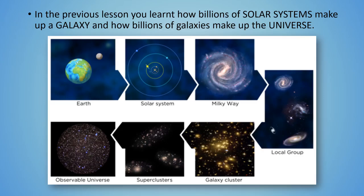In the previous lesson, you learned how billions of solar systems make up a galaxy and how billions of galaxies make up the universe. Our sun with planets orbiting around it is called the solar system. Billions of solar systems together make up a galaxy — in our case the Milky Way. Billions of galaxies of different shapes and sizes together make up the universe as we know it.